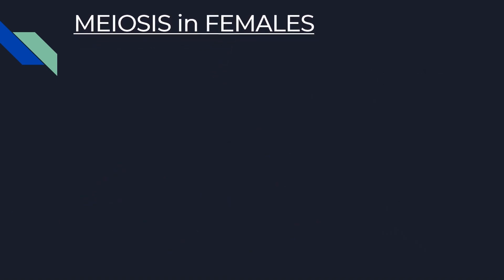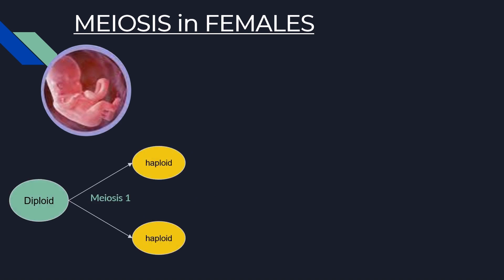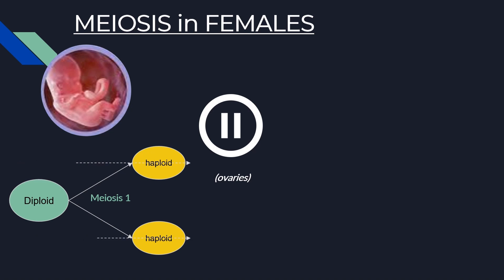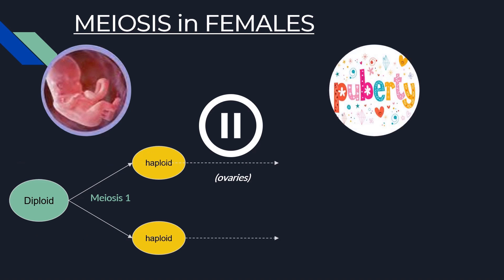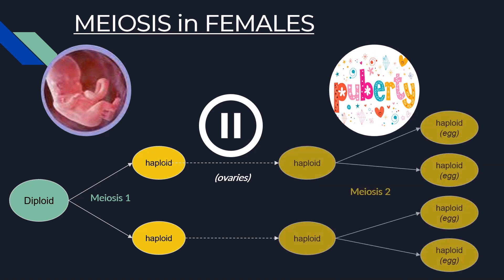In contrast, in females, meiosis begins during the fetal stage when a series of diploid cells enter meiosis 1. At the conclusion of meiosis 1, the process pauses and the cells gather in the ovaries. Then, at puberty, meiosis resumes. One cell enters meiosis 2 each month, and the result is a single egg per cycle because the other meiotic cells disintegrate. Each egg cell contains 23 chromosomes and is haploid.